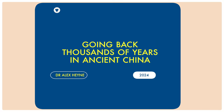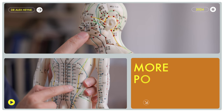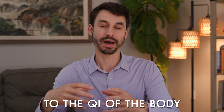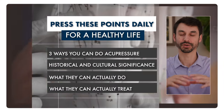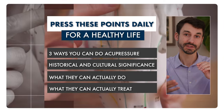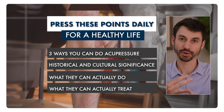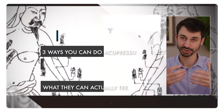Going back thousands of years in ancient China, certain acupuncture points were considered to be more efficacious or more powerful than others, meaning that you could access certain clinical conditions easier from a certain location on the body, or that these points either had more qi or had more access to the qi of the body. In this video, we'll discuss three of the more famous traditional acupuncture points, three ways you can do acupressure on each of them, their historical and cultural significance, and what they can actually treat.